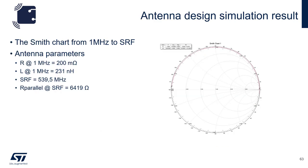After designing our antenna, we'll need to measure parameters on the antenna in order to calculate the matching circuit. Looking at the Smith chart here, we would measure from 1 MHz up to the self-resonant frequency of the antenna. We would measure the following parameters: the resistance at 1 MHz, in this case 200 milli-ohms; the inductance at 1 MHz, which turns out to be 231 nanohenries; the self-resonant frequency, characterized by the crossing of the real axis at 539 MHz; and finally the parallel resistance at self-resonant frequency, which is 6.4k ohms.